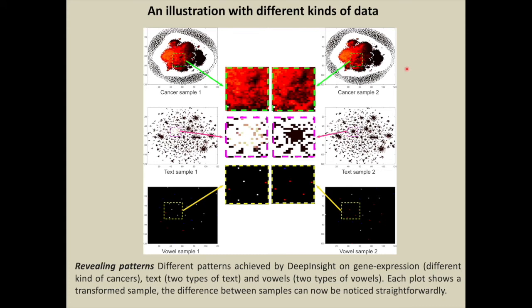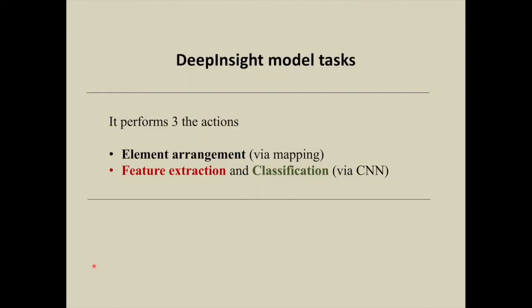In this illustration, images produced by DeepInsight method are given. You can see samples from two types of cancers - cancer sample one and cancer sample two. The difference can be noticed straightforwardly. In a similar way, for text and vowels, the classification becomes easier.